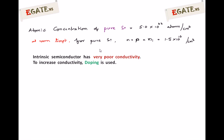Intrinsic semiconductors have a major disadvantage: very poor conductivity. To increase conductivity, we go for doping. Doping is the process of adding impurity to increase the carrier concentration and thus increase conductivity. After doping, the intrinsic semiconductor turns into an extrinsic semiconductor with very good conductivity.